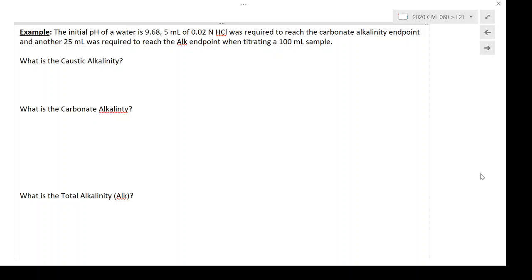the initial pH is 9.68 and it takes 5 milliliters of an acid, and I'm using 0.02 normal hydrochloric acid. That 5 mils is how much it takes to reach the carbonate alkalinity endpoint, and then it takes an additional 25 mils to reach the total alkalinity endpoint, and the sample size is 100 mils. So we're